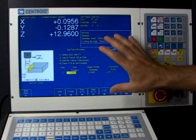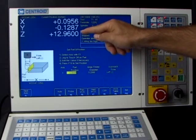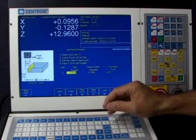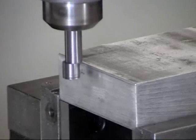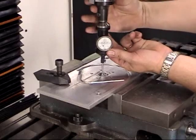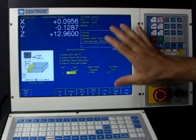This is the part setup menu and we can use this screen right here to set our XY and Z zero positions using any method. So no matter if we're using the automatic touch probe or an edge finder or a center finder or even just positioning the tool to a position and setting zeros, we can do that right here with this screen.